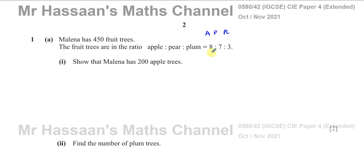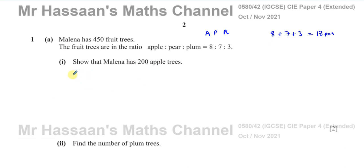There are 450 trees split up into this ratio. So what we need to do is find out the total number of parts of this ratio. You have 8 parts for the apple plus 7 parts for the pears plus 3 parts for the plums — that gives you 18 parts in total, and the apple trees make up 8 parts out of that 18. So the fraction of apple trees out of the total is 8 out of 18, times 450 — that will give you the total number of apple trees.